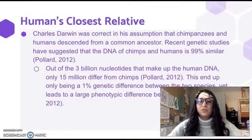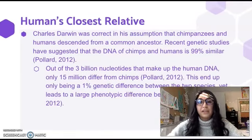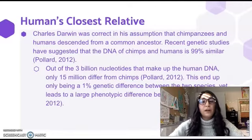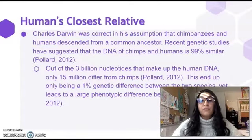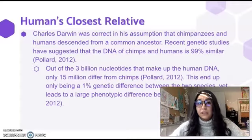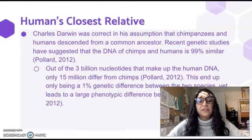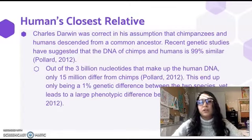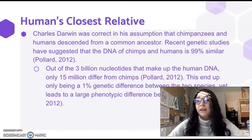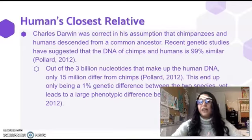Regarding humans' closest relative — Charles Darwin was correct that chimpanzees and humans share a common ancestor. Not only that, but we are 99% genetically similar to chimpanzees. Out of the 3 billion nucleotides that make up human DNA, only 15 million are different from chimps. That 1% difference leads to many phenotypic differences, since a lot of what distinguishes us from chimpanzees is held within that 1%.